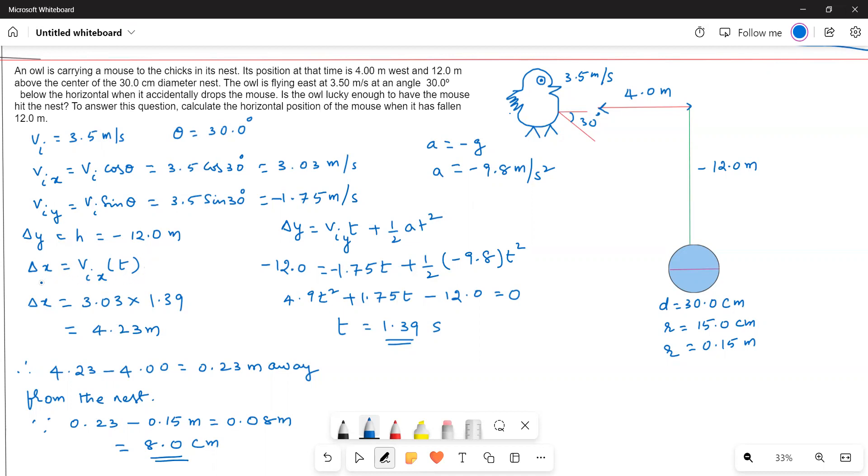What we have to find is Δx, the horizontal displacement. We know horizontal displacement is horizontal velocity times time. We know the horizontal velocity from the data we calculated, but we don't know the time, so we have to calculate it.